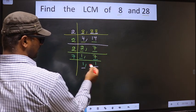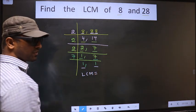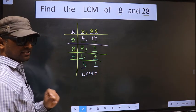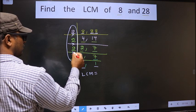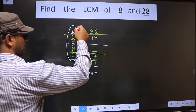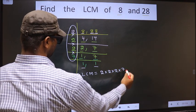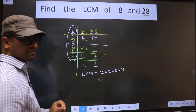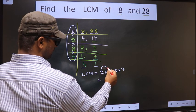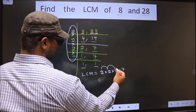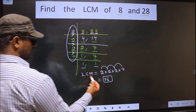We got 1 in both places. So our LCM is the product of these numbers: 2 into 2 into 2 into 2 into 7. Now let us multiply: 2 into 2 is 4, 4 into 2 is 8, 8 into 7 is 56. So 56 is our LCM.